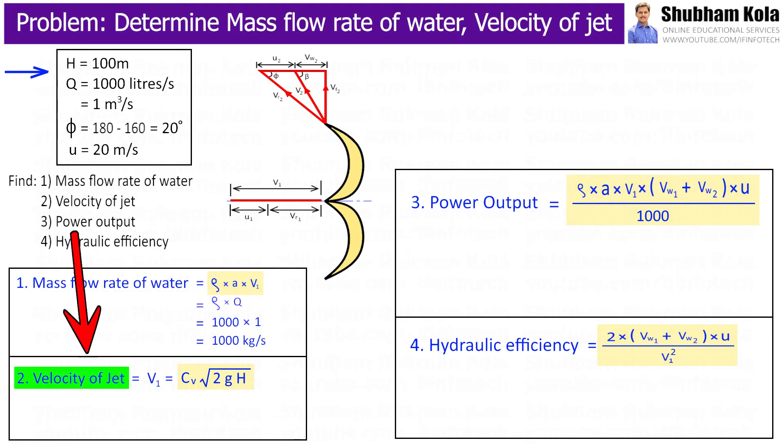Now, next we want to determine velocity of jet V1, and the formula is Cv into under root of 2gH. In the problem, net available head is given as 100m. Here small g is acceleration of gravity which is 9.81.